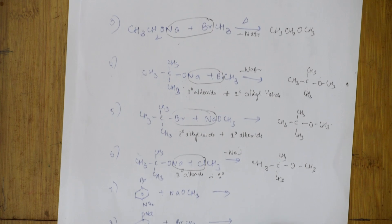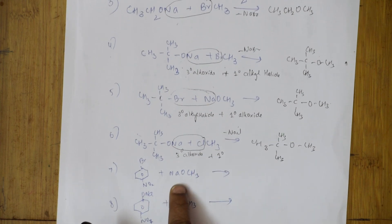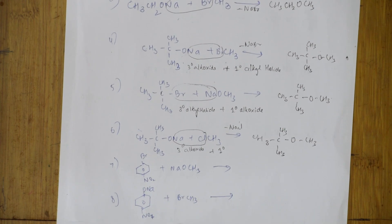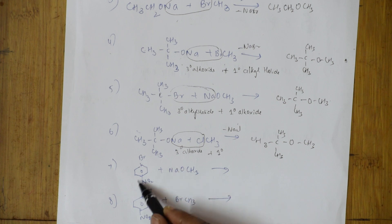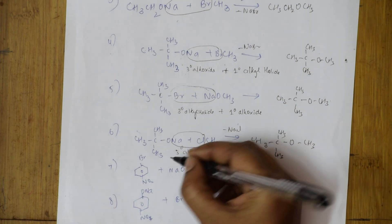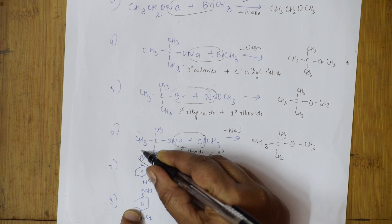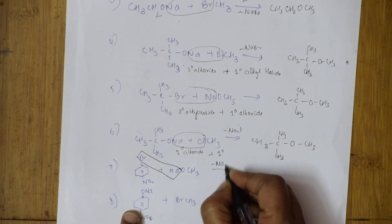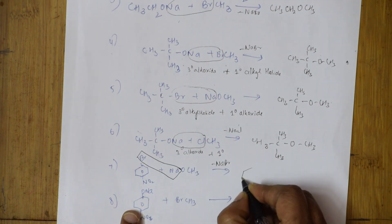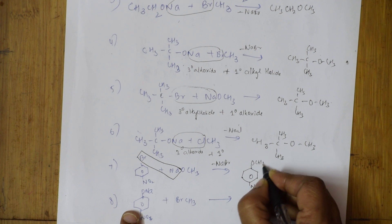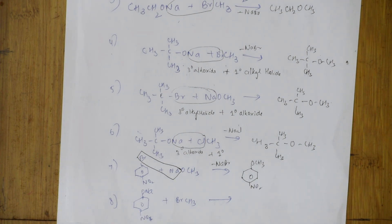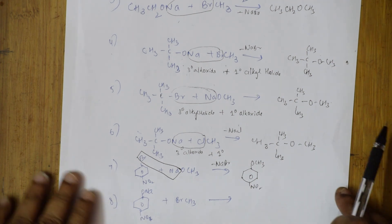One common mistake: when you have bromine paired with a nitro group (ONa and CH₃Br), students wrongly remove NaNO₂. The correct approach is to take out NaBr (Br from the haloalkane, Na from the alkoxide) and write the remaining product — giving NO₂ and OCH₃ on the product.